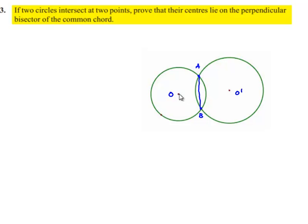We need to prove that OO' is perpendicular to AB. Let us assume that OO' intersects AB at M, and AM is equal to MB.